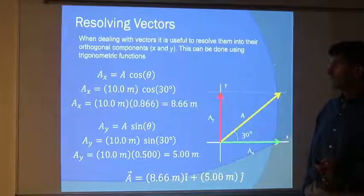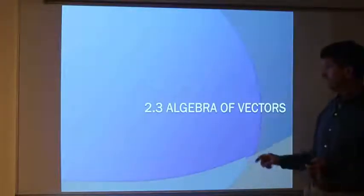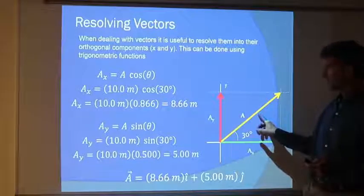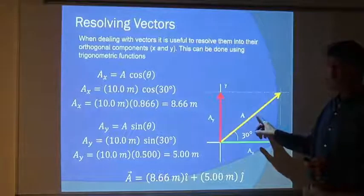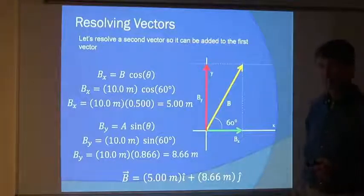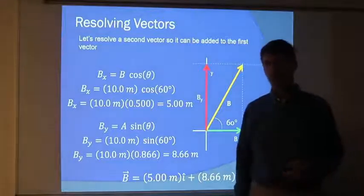Alright, so I'm going to take A and add it to B. Now, look. Oops, I went too far. A doesn't point in the same direction as B. A is pointing at 30 degrees. B is at 60 degrees. How do I add the two together? Add x's to x's and y's to y's.